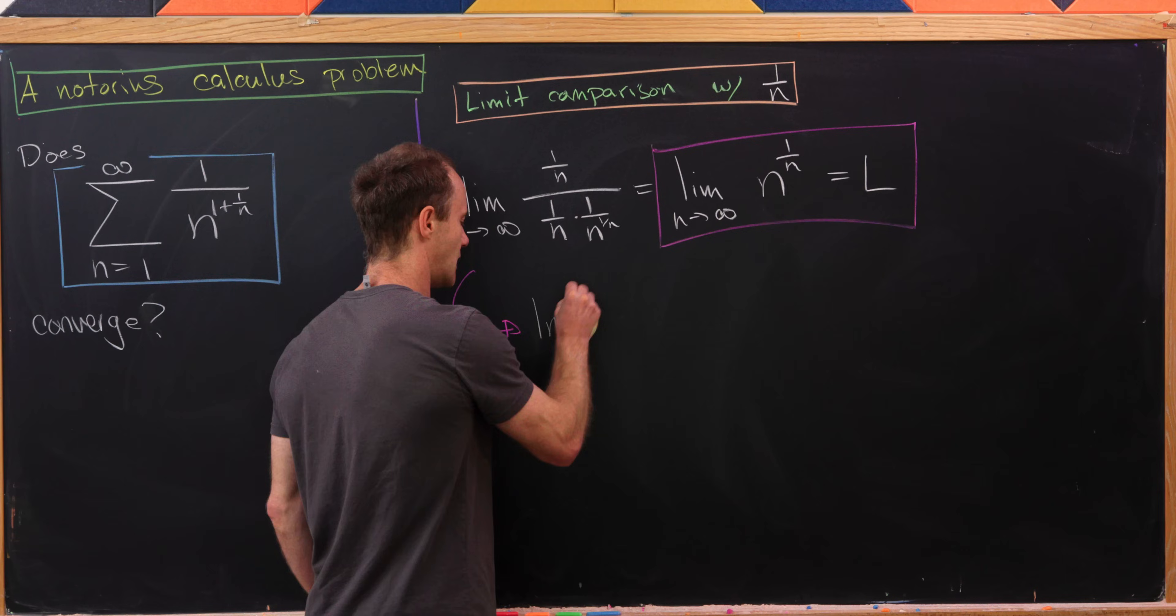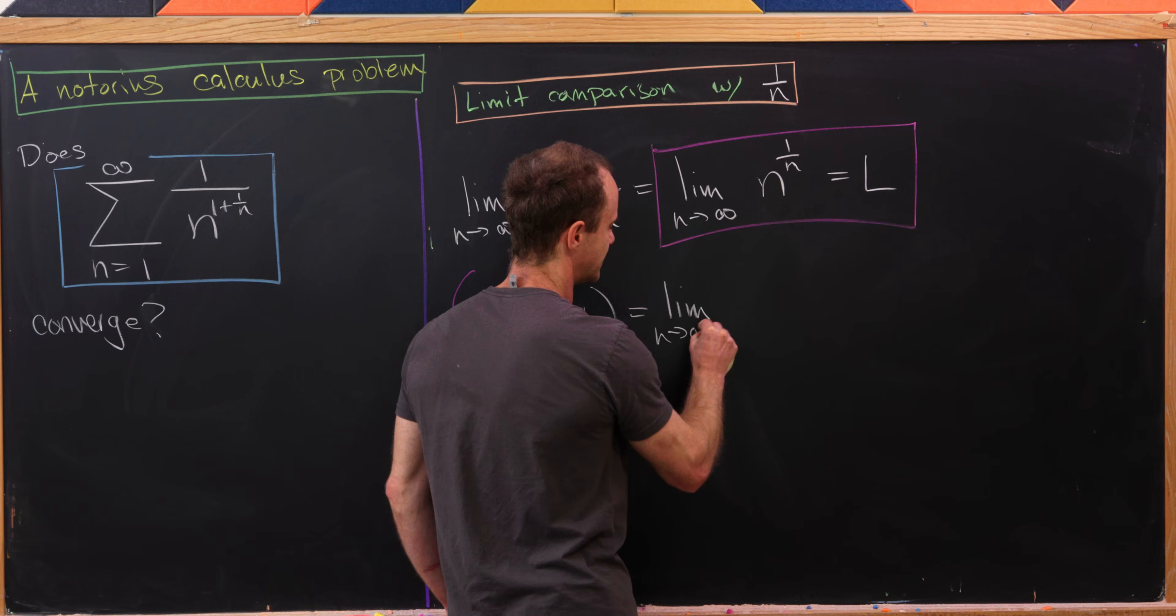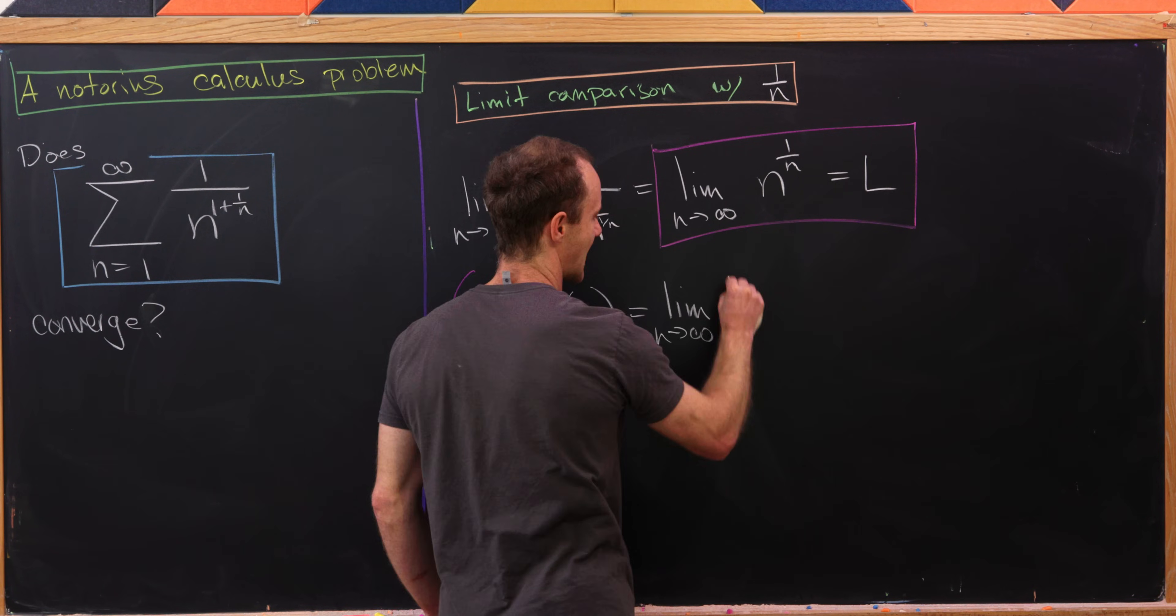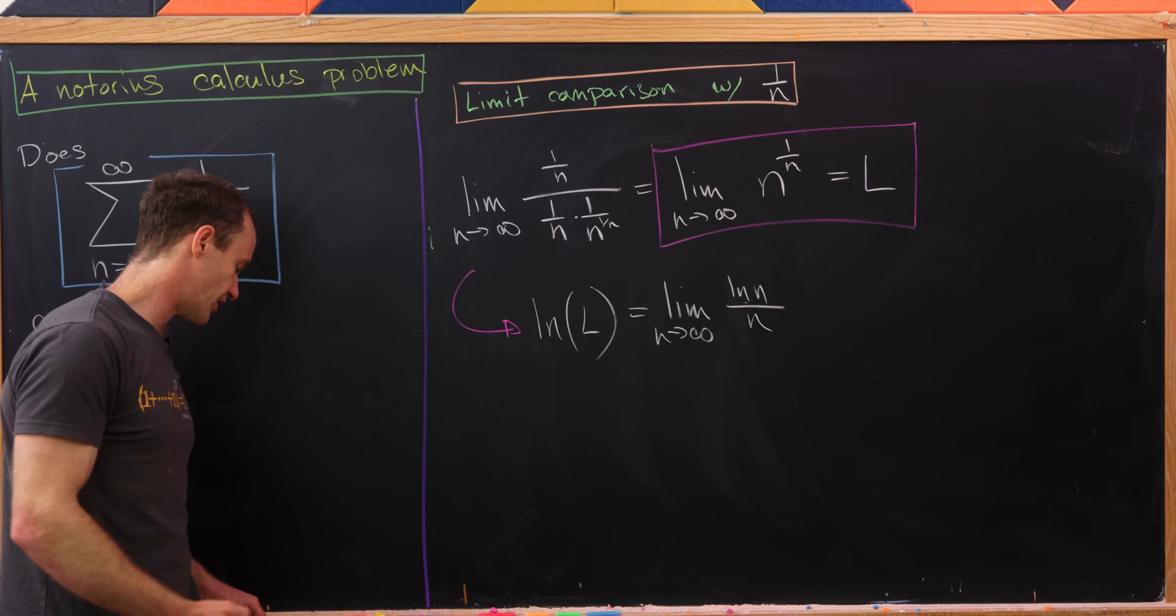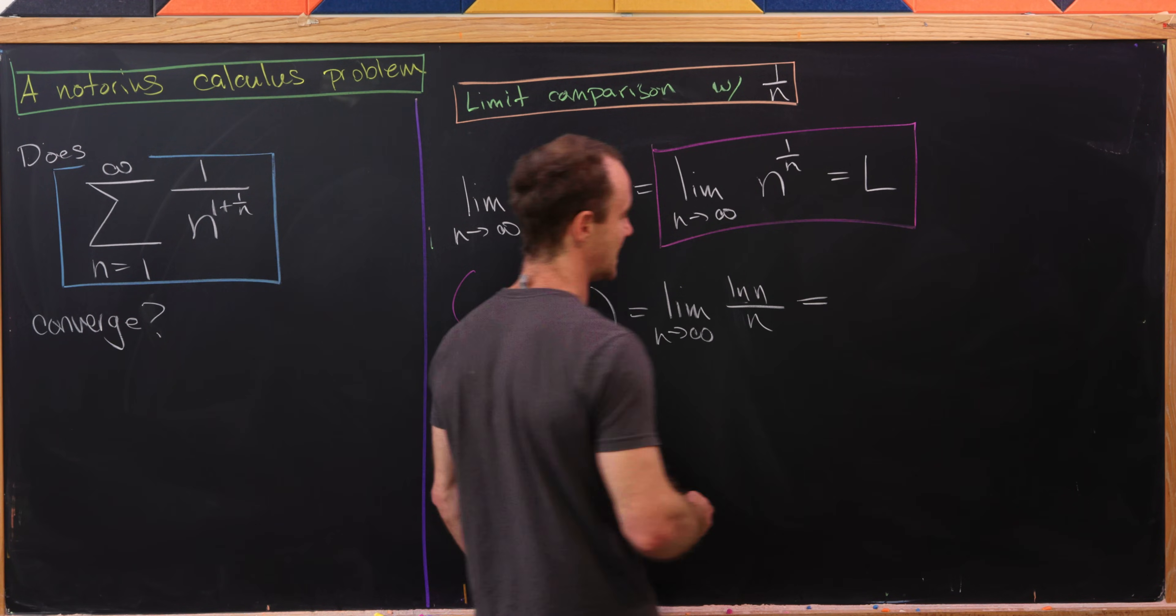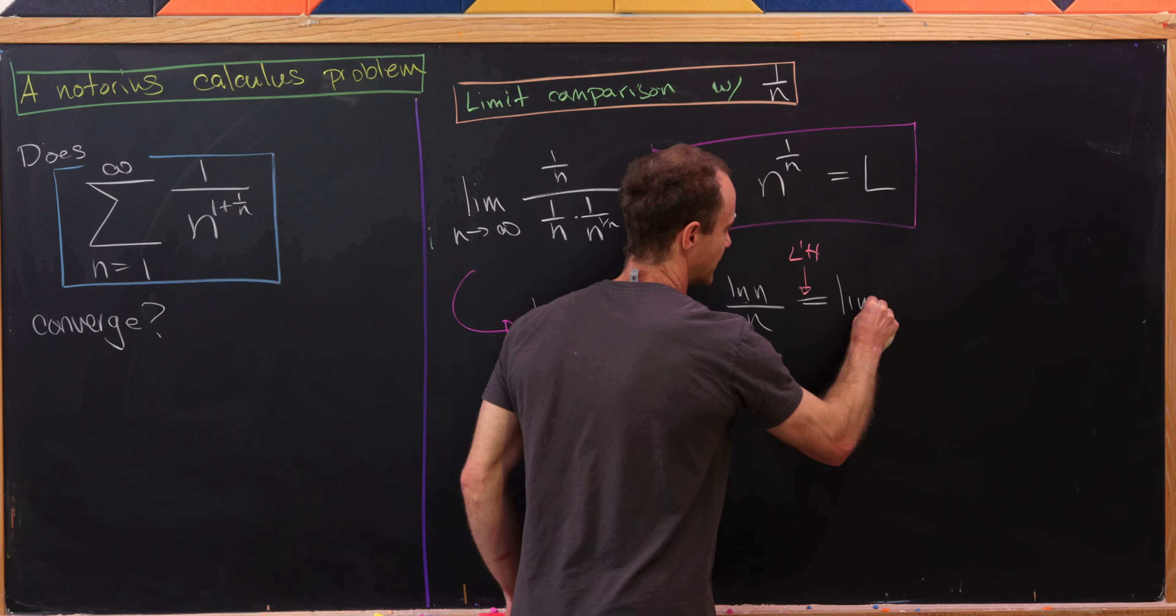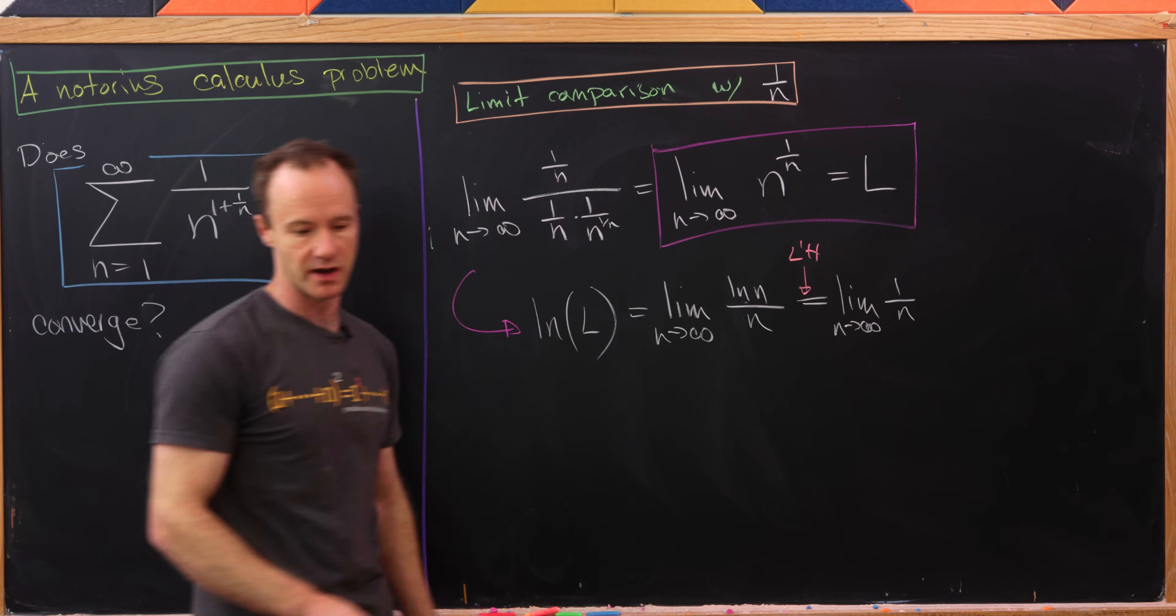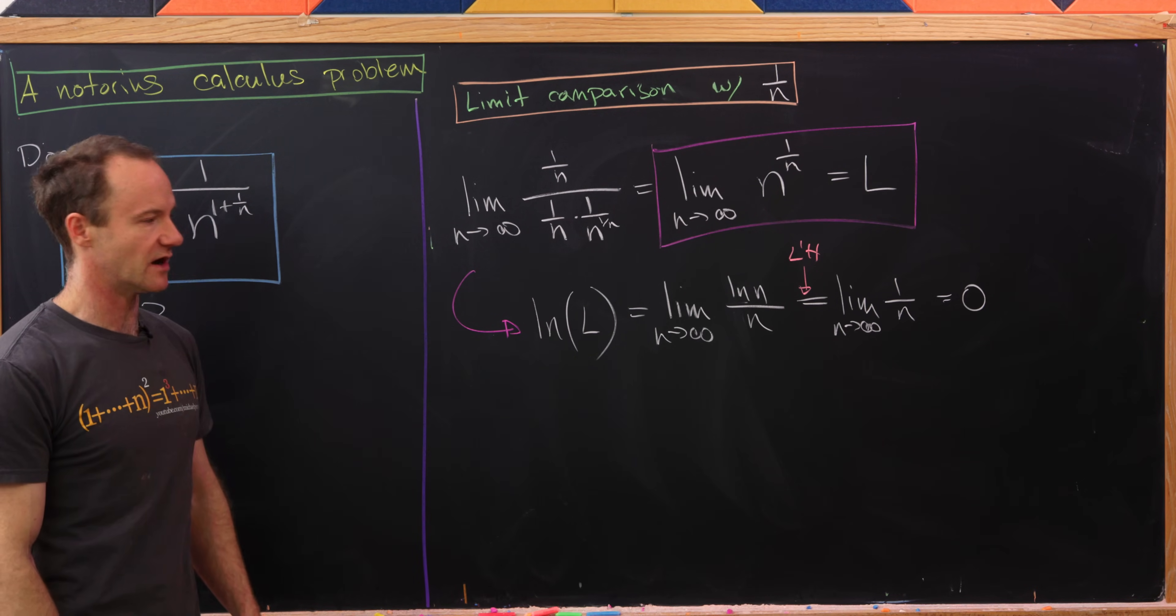So let's apply the logarithm to both sides. We have ln(L) is now equal to the limit as n goes to infinity of (1/n) × ln(n). But I'm going to write that as ln(n)/n. But now as n goes to infinity, both the numerator as well as the denominator approach infinity. So that means I have an indeterminate form which is ripe to use L'Hôpital's rule. So taking the derivative of the numerator and the denominator, I'm left with the limit as n goes to infinity of 1/n, which is clearly equal to 0.